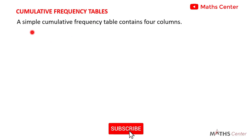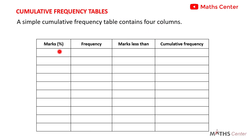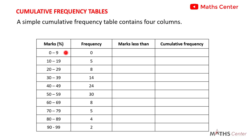A simple cumulative frequency table contains four columns. Here is an example. In the first column you have the marks. In the second column you have the frequency. The third column will have the marks less than and the fourth column will have the cumulative frequency. Let's assume that these are the marks scored by some students in a test and these are their corresponding frequencies. The marks are grouped: 0 to 9, 10 to 19, 20 to 29, and it continues up to 90 to 99, and each mark has its corresponding frequency.